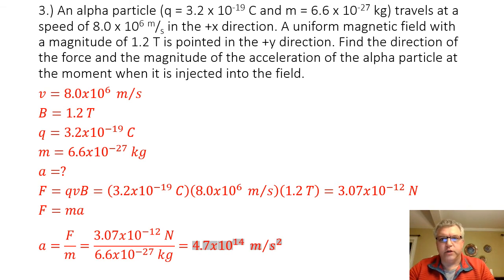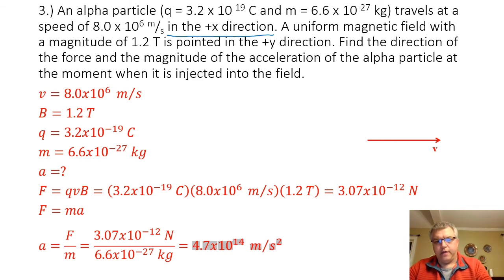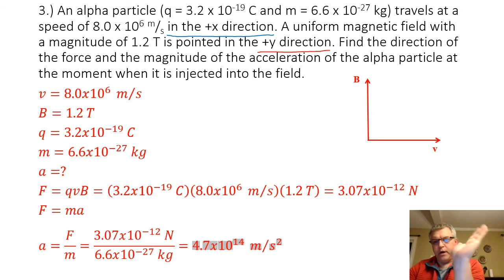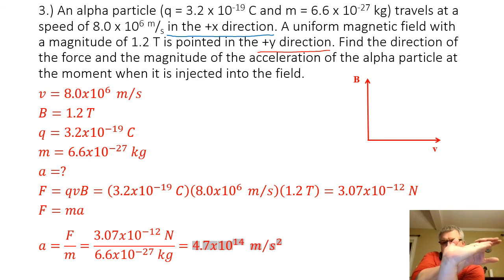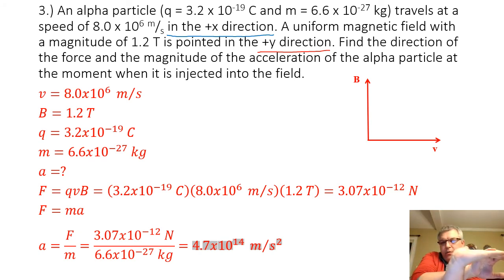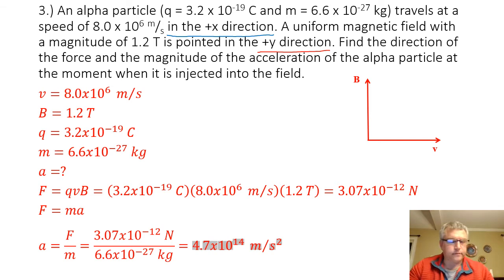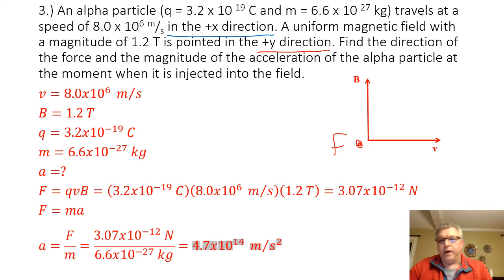To find the direction of the force, the velocity is in the positive X direction and the magnetic field is in the positive Y direction. Using the right-hand rule, my palm needs to be pointed upward for the magnetic field, and my fingers need to point to the right for velocity. My thumb then points in the positive Z direction or coming out of the screen. So the force is in the positive Z direction.